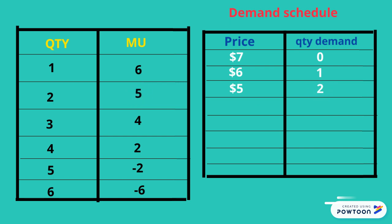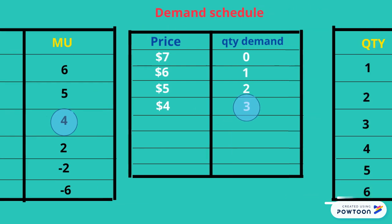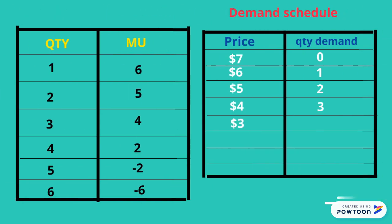When the price drops to $4, we are looking at MU of 4. Therefore, quantity demanded will be 3. When the price drops to $3, we are looking for MU of 3, which is not available. Therefore, you look for output that gives you more than 3 utils of satisfaction. In this case, consumers will choose MU of 4. Therefore, quantity demanded will be 3.